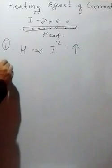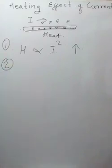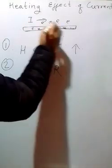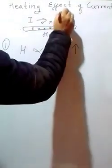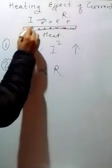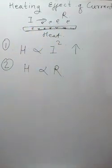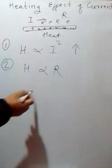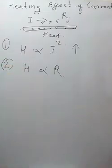And number two, if the resistance of this wire is very high, then the current also will feel very much difficult to flow. So there will be more friction. So now when there is increase in resistance, heat also will increase.